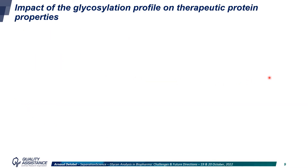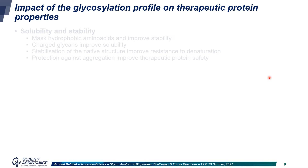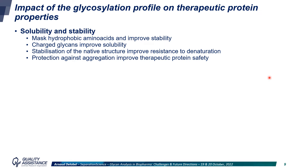This glycosylation profile impacts the properties of the therapeutic protein. First, its solubility and stability, as glycans can mask hydrophobic amino acids and improve stability, and more specifically, charged glycans may improve solubility. They can also stabilize the native structure, improve resistance to denaturation, and protect against aggregation, which will improve the safety of the drug.